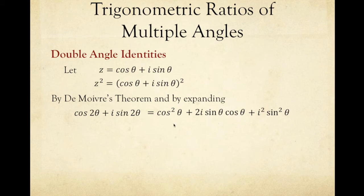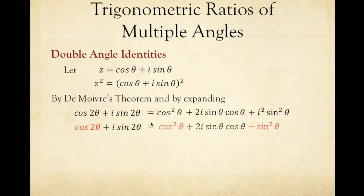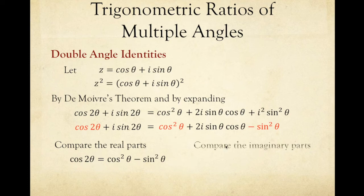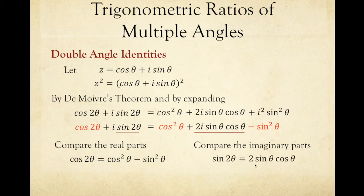Since i squared equals negative 1, this results in cosine squared theta plus 2i sine theta cosine theta minus sine squared theta. The terms highlighted in red are the real parts. Comparing real parts: cosine 2 theta equals cosine squared theta minus sine squared theta. Comparing imaginary parts — taking just the coefficient without the i — sine 2 theta equals 2 sine theta cosine theta.